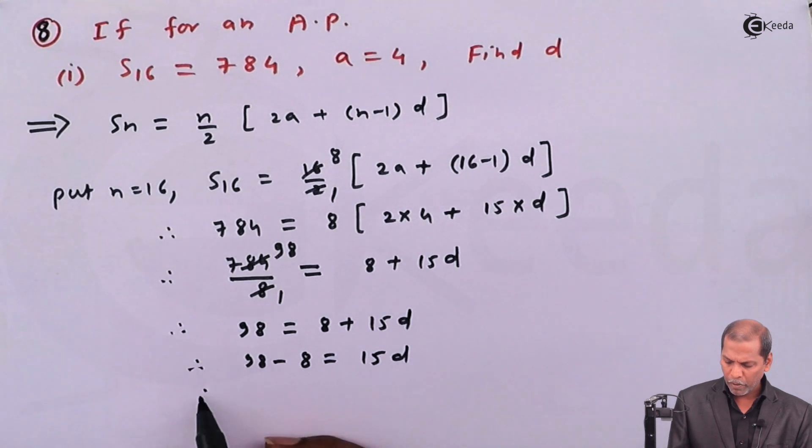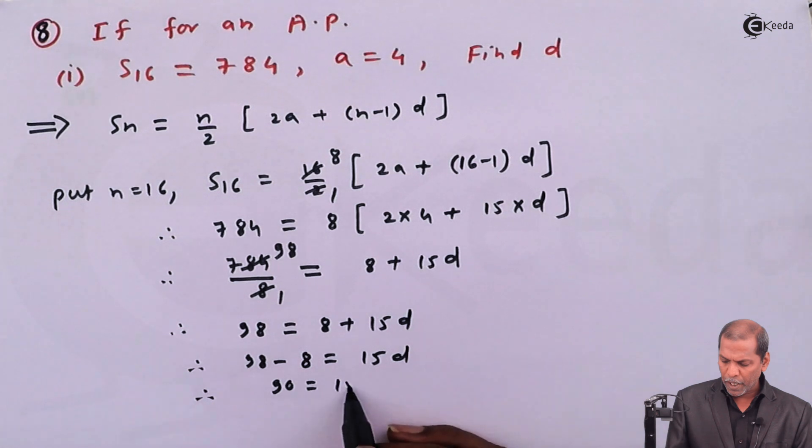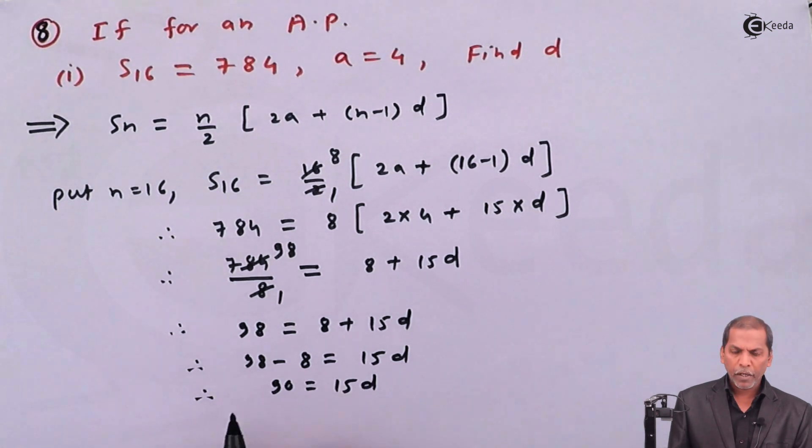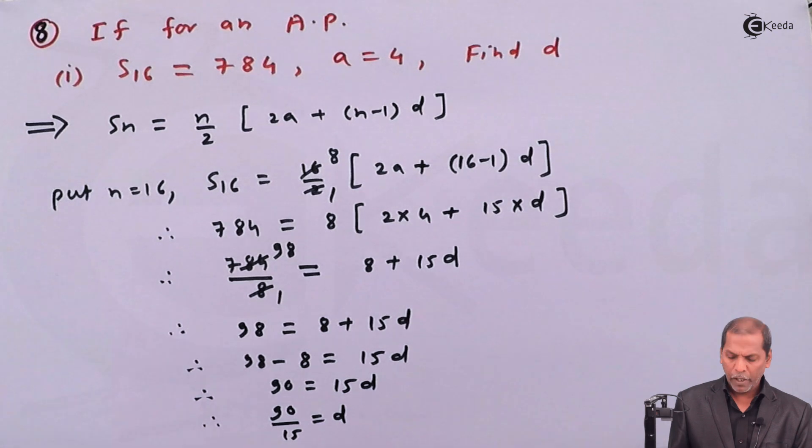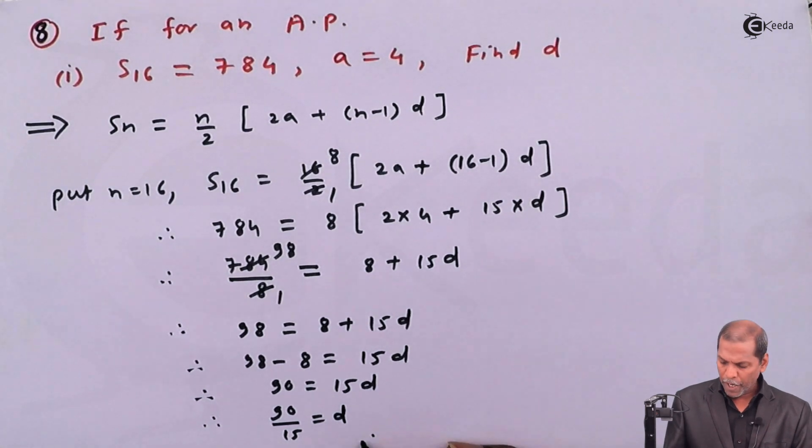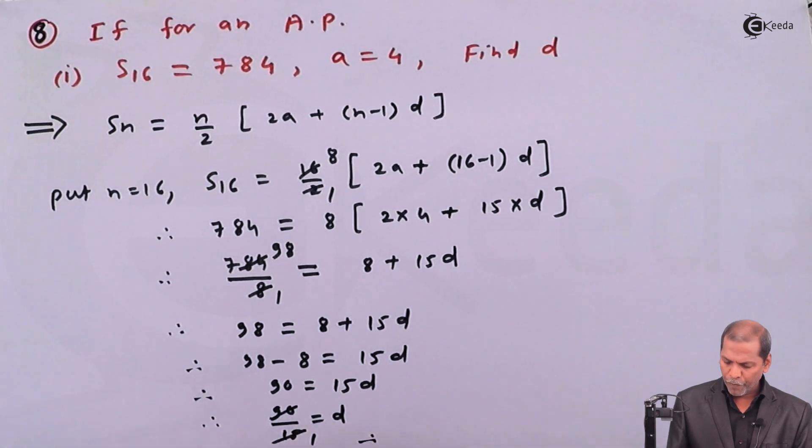Therefore 90 is equal to 15d. Therefore 90 upon 15 is equal to d, and finally we have 15 ones are 15 and 15 sixes are 90.